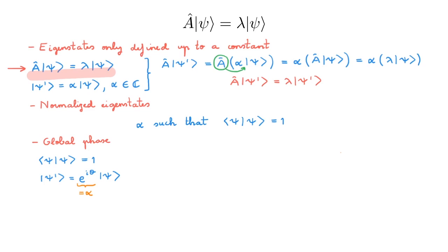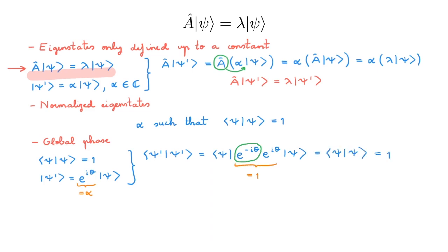Let's see what the length of psi prime is. We start with the bracket, use the definition of psi prime, and remember that to build a bra from a ket we need to take the complex conjugate of any constants, so we get e to the minus i theta. The exponentials combine to give 1, so we get psi psi which is 1. This means that the length of psi prime is also 1, so even after normalizing an eigenstate we still have an extra degree of freedom from a global phase factor. This ambiguity is in fact true for any ket, not just eigenkets, as we haven't used the fact that psi happens to be an eigenket of A.